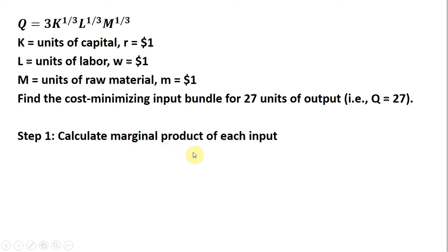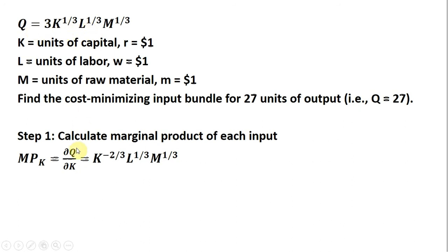Step 1: calculate the marginal product of each input. We'll start with the marginal product of capital, taking the partial derivative of the production function with respect to capital. We find the K term, bringing down the one-third in front. One-third times three is just one, so we get K raised to the one-third minus one, which gives K raised to the minus two-thirds power. The other variables are unchanged.